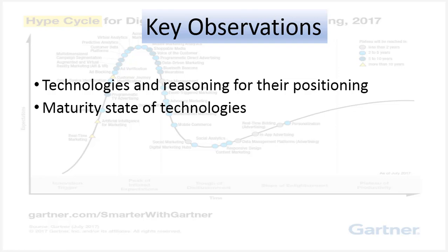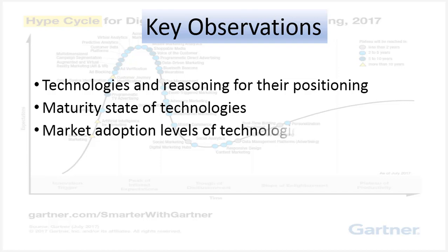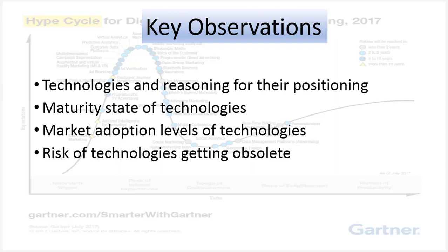The report also provides a discussion on the maturity state of technologies and other items on the hype cycle graph. For example, while certain technologies are categorized as emerging, there are others that are adolescent, mature, etc. The report also highlights the market adoption levels of each technology within the target audience, which can provide a level of confidence to those considering adopting a certain technology. Each hype cycle report also signals if certain technologies are at risk of getting obsolete, although there are no rules on when and in which phase it can happen — most likely this happens in the first three phases.